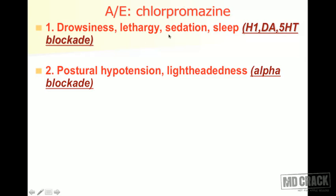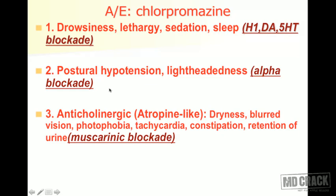Next, chlorpromazine has got alpha-blocking action. The alpha receptors are present in the peripheral blood vessels; when you block them there is vasodilation. This leads to a fall in blood pressure, so the patient could get postural hypotension, lightheadedness, and could get a syncopal attack. That's the alpha blockade effect.